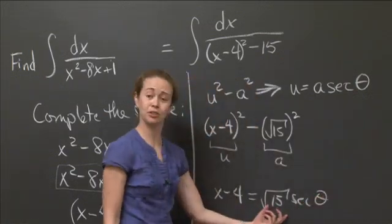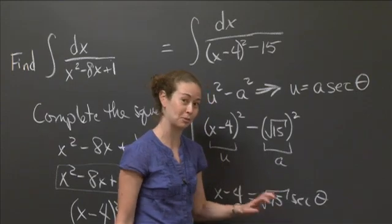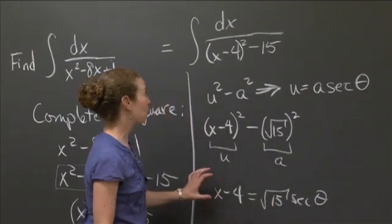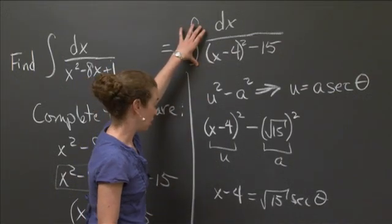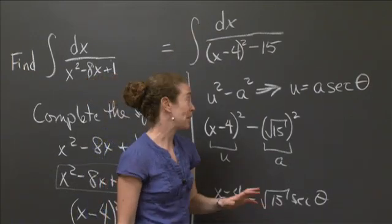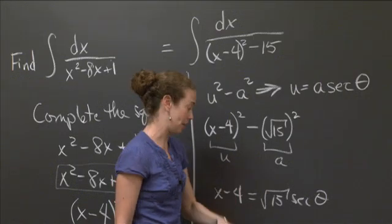And again, you might say, why is this good? Well, what we're going to be able to do is we're going to be able to rewrite this in terms of trigonometric functions, which will make it much simpler to solve. So let's use what Professor Jerison gave us. And so what we see is that this is u and this is a. Right? So I get x minus 4 is equal to square root of 15 secant theta.